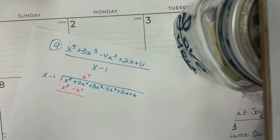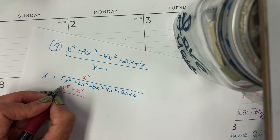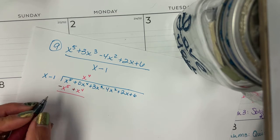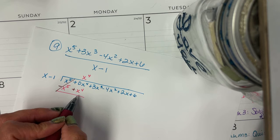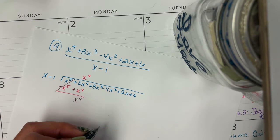And then we do a sign change. So this becomes negative, this becomes positive, because we have to subtract. Those cancel. So 0x to the fourth plus 1x to the fourth is just x to the fourth.